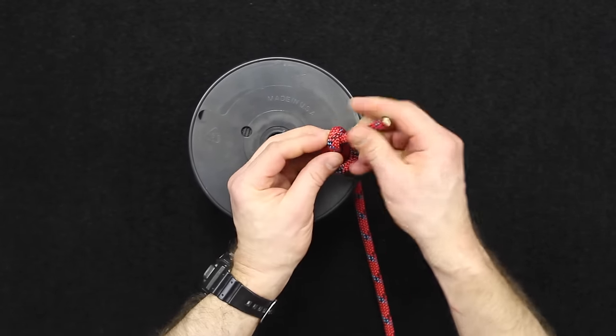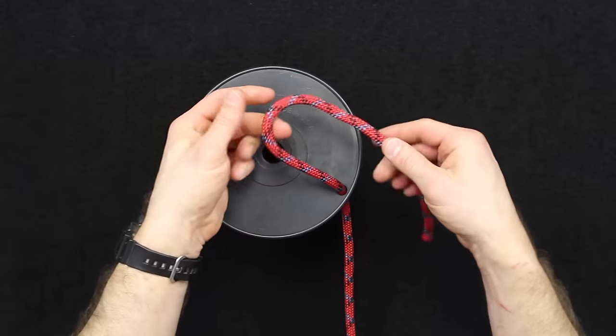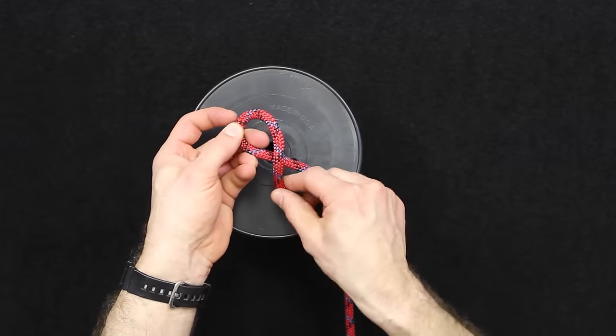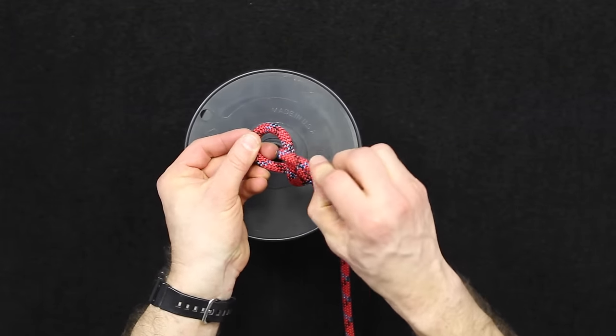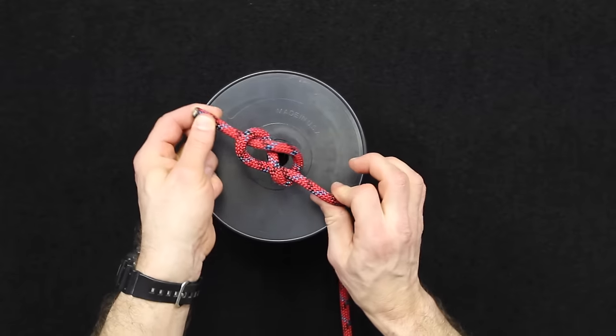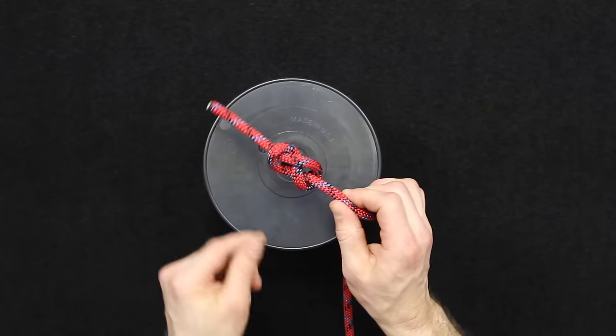And I will tie that one more time so you can see that. A figure eight just goes around the standing part and then back through that loop that you've created, forming the figure eight.